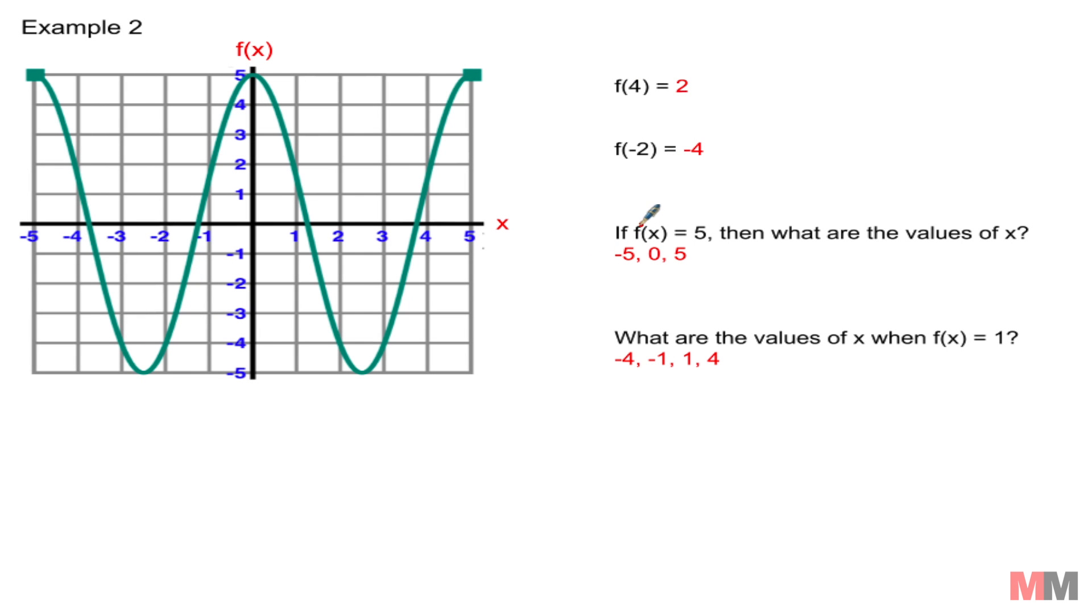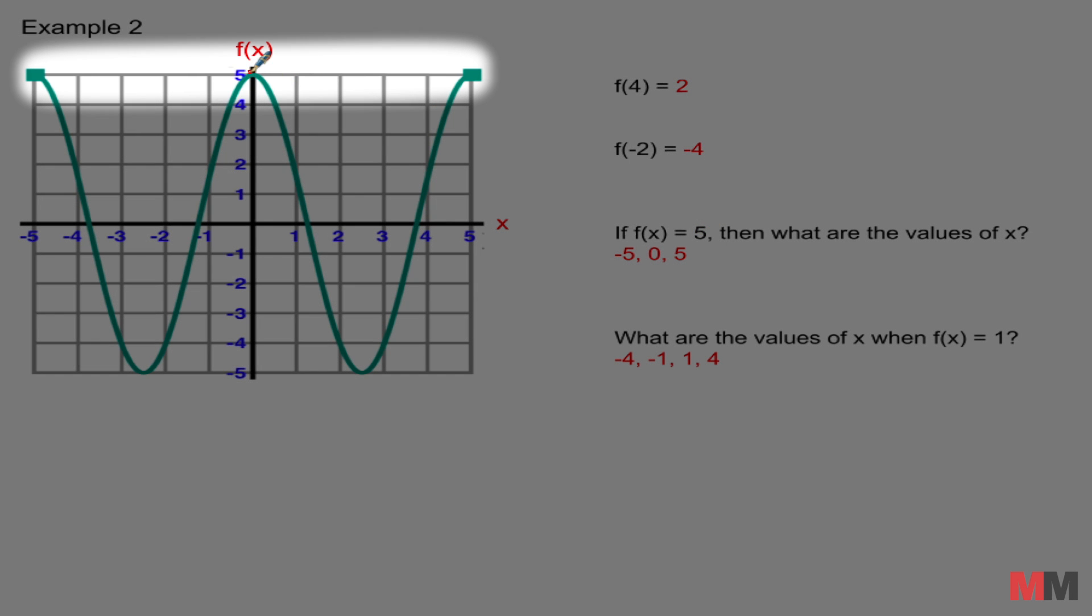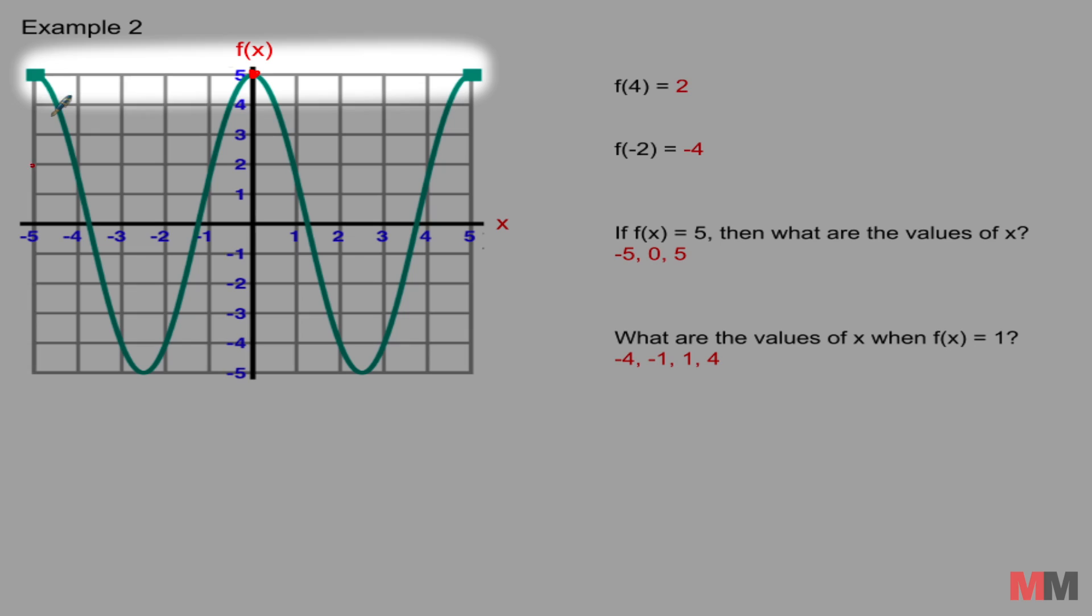Vice versa. If f of x equals 5, so that means this number right here, it's not what x is. It's what y represents. So just go through the y axis until you get to 5 and you got to read the x values. And for this, there are three answers. There's one right there. And that is the zero answer. One to the right. And that's how we got 5 and one to the left. Negative 5.